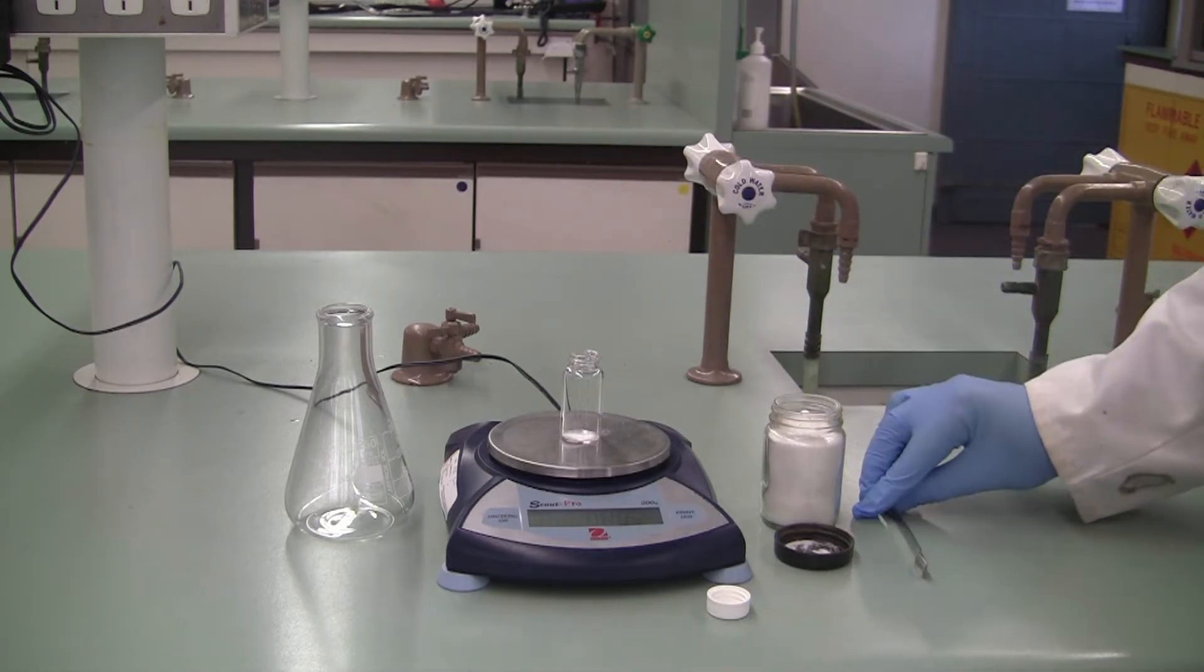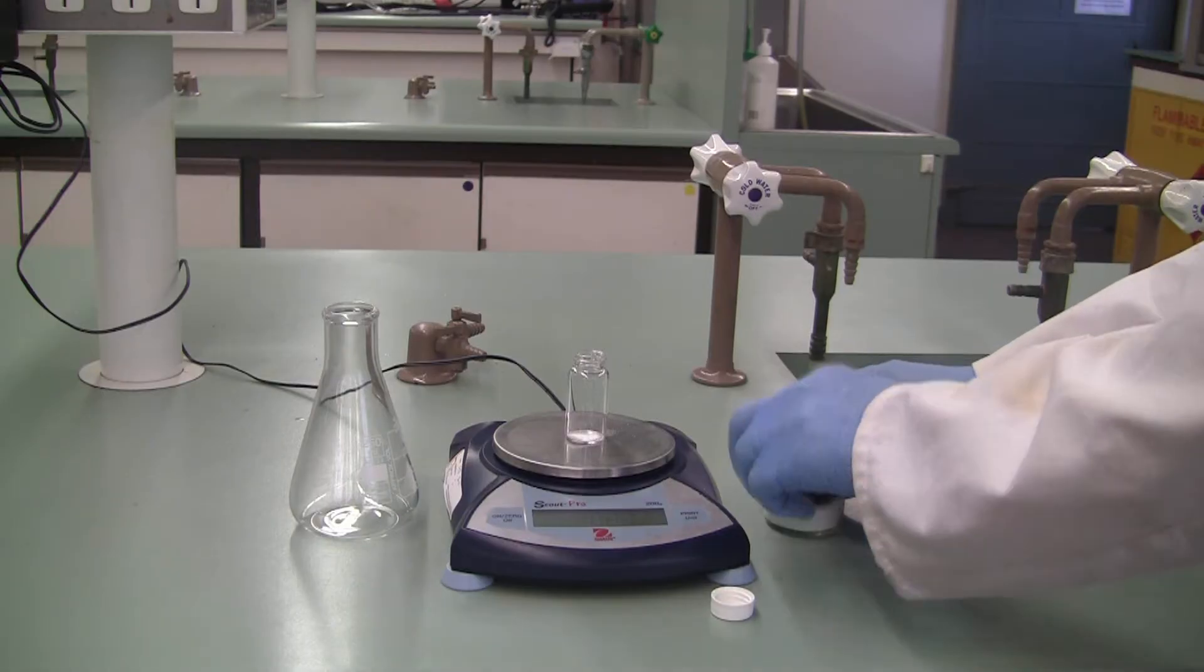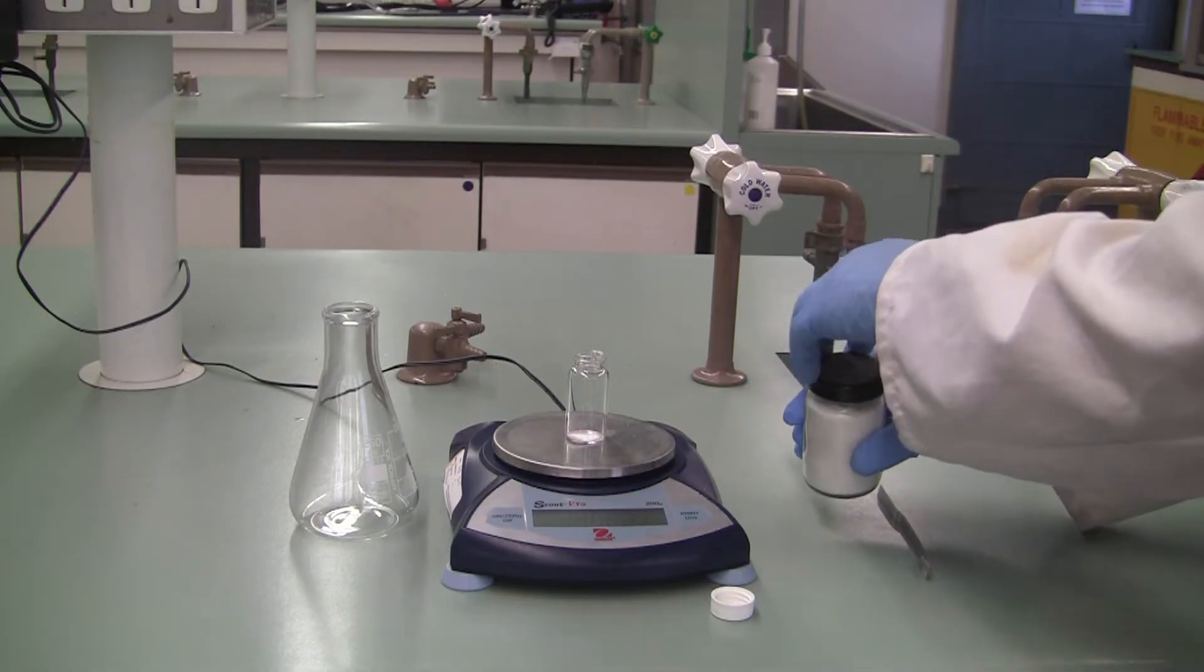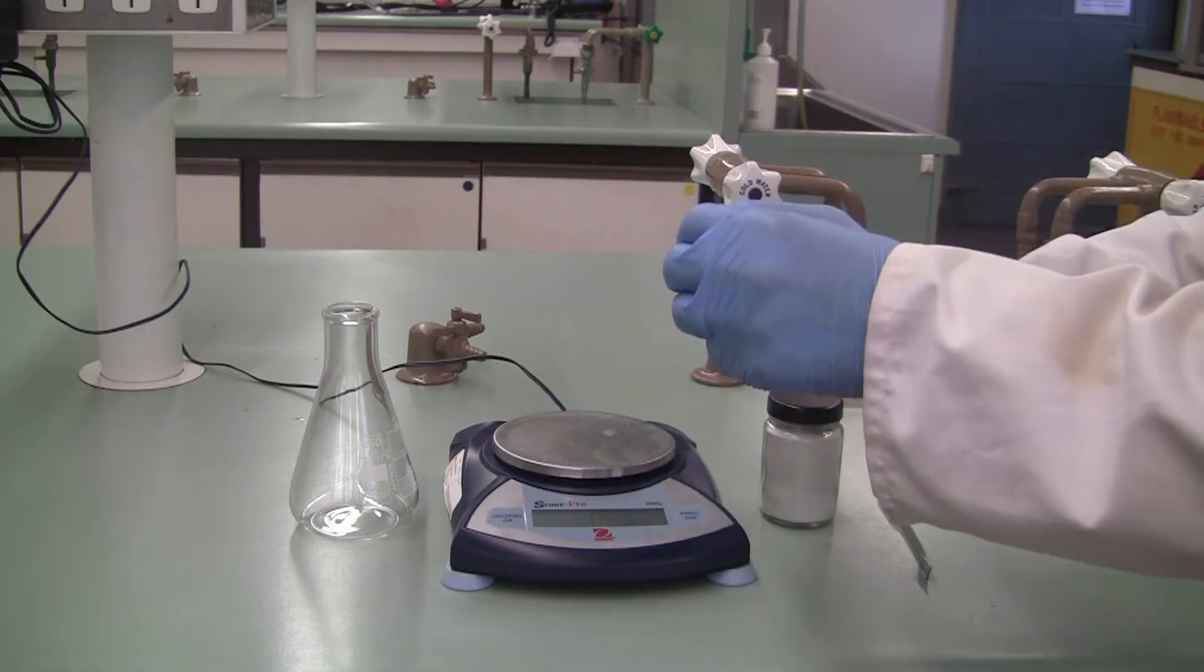Pop the lid back on the substance so it doesn't get contaminated, and put the lid back on your weighing vial so nothing falls in or out. Then head to the balance room.